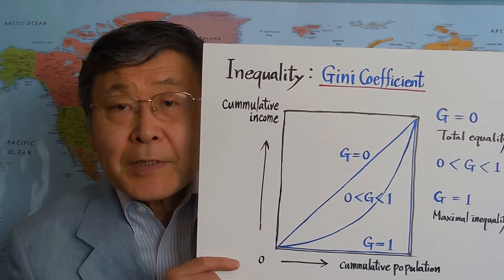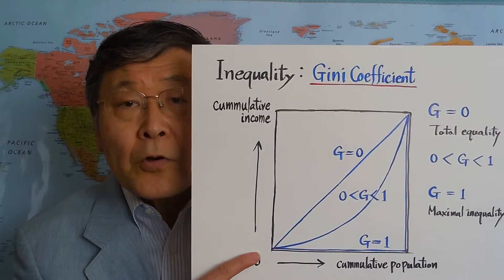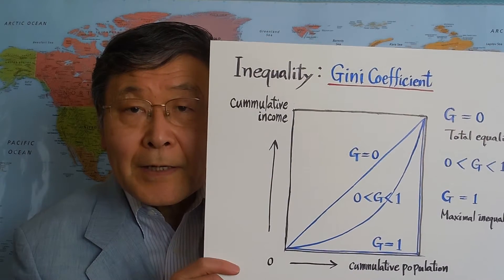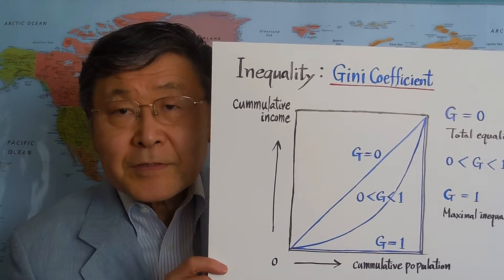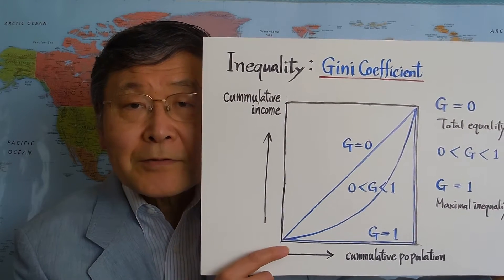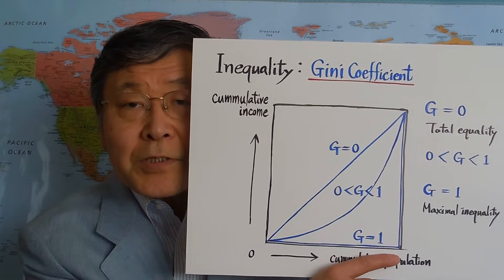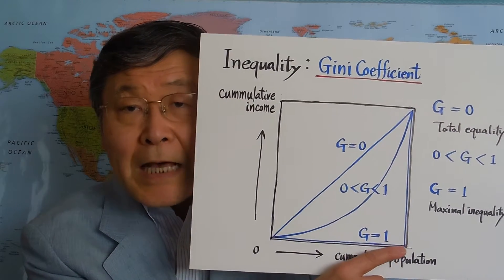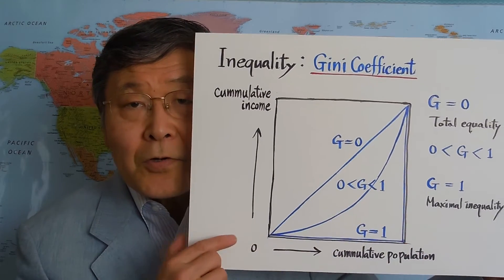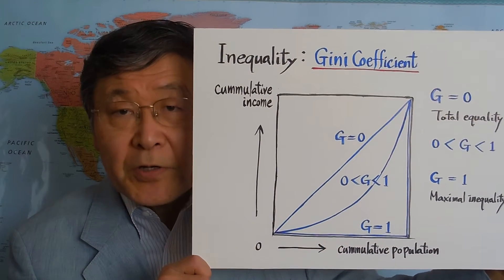The other extreme is maximum inequality, where only one person has all income — like a king versus slaves. If you count all the poor people with no income, total income is zero. And the last person, the richest, has all the income suddenly. That's the case of maximum inequality.